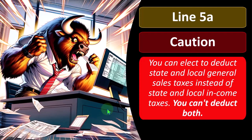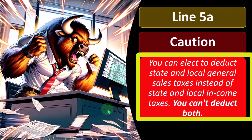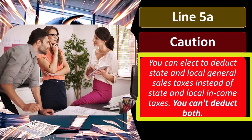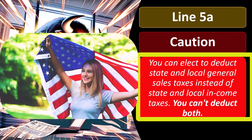Line 5A caution: you can elect to deduct state and local general sales taxes instead of state and local income taxes — you can't deduct both. It used to be that they would only allow the income tax, which caused some states to conform to an income tax system that could maximize the capacity for deduction, like California and New York. Those states tried to maximize state and local tax deductions for people, which basically means the federal government is subsidizing the state taxes.